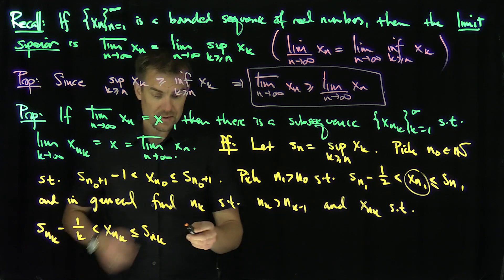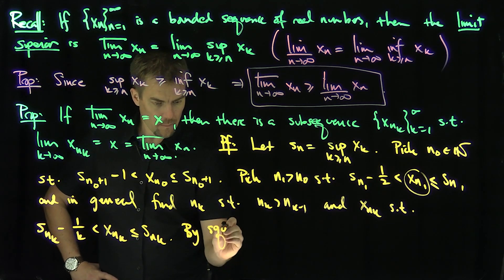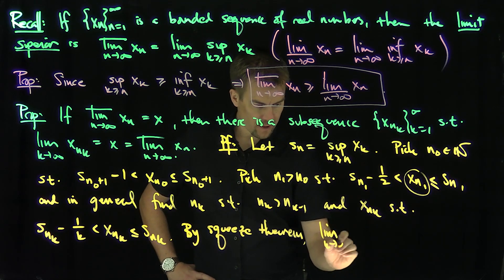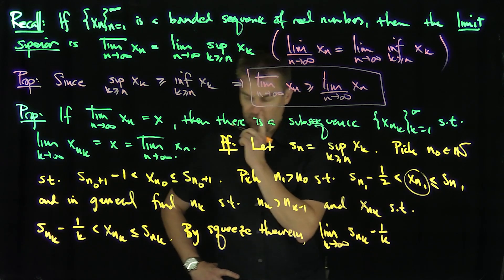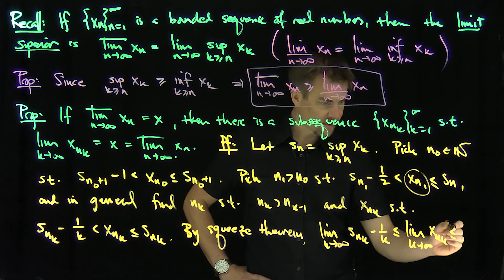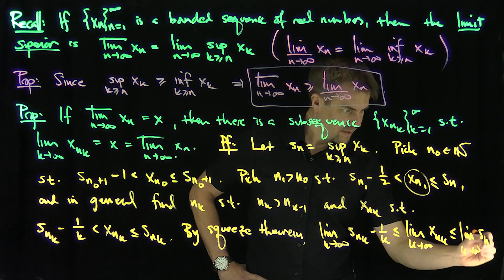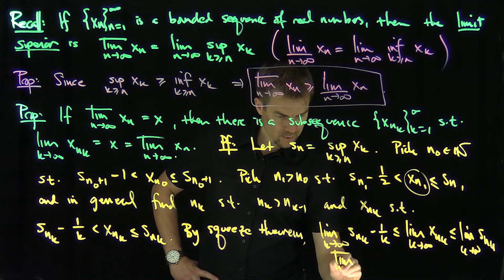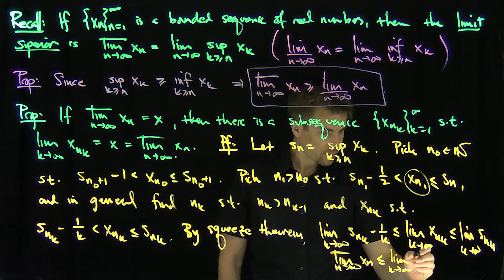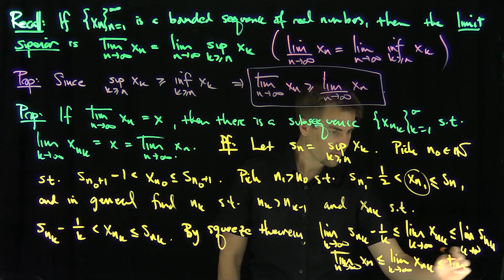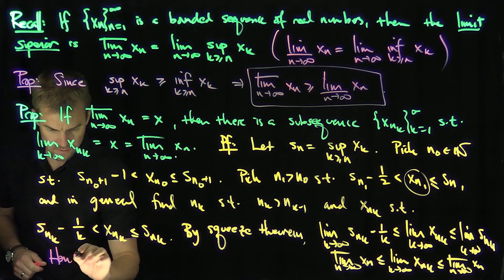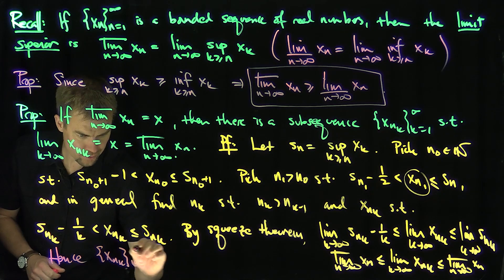By the squeeze theorem, I can say: the limit as k goes to infinity of (s_{n_k} minus 1/k) is less than or equal to the limit as k goes to infinity of x_{n_k} (which we're going to prove exists), and that is less than or equal to the limit as k goes to infinity of s_{n_k} — which goes to the lim sup as n goes to infinity of x_n. Hence this subsequence x_{n_k} (k from 1 to infinity) converges to the lim sup.